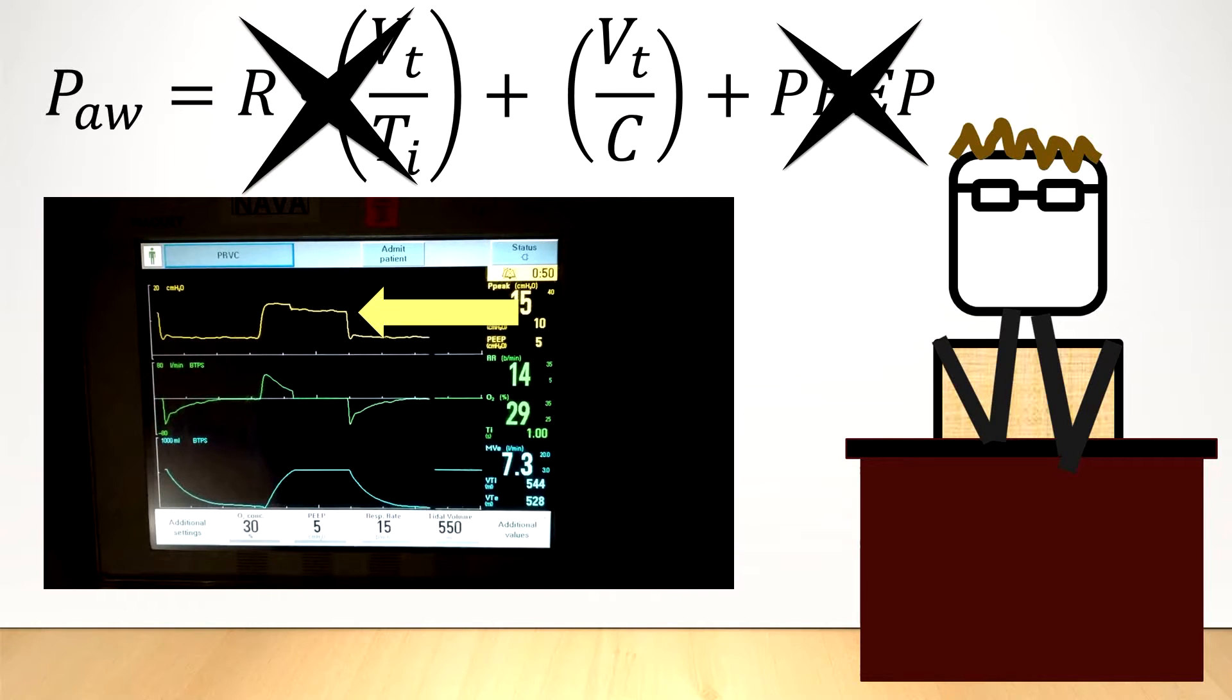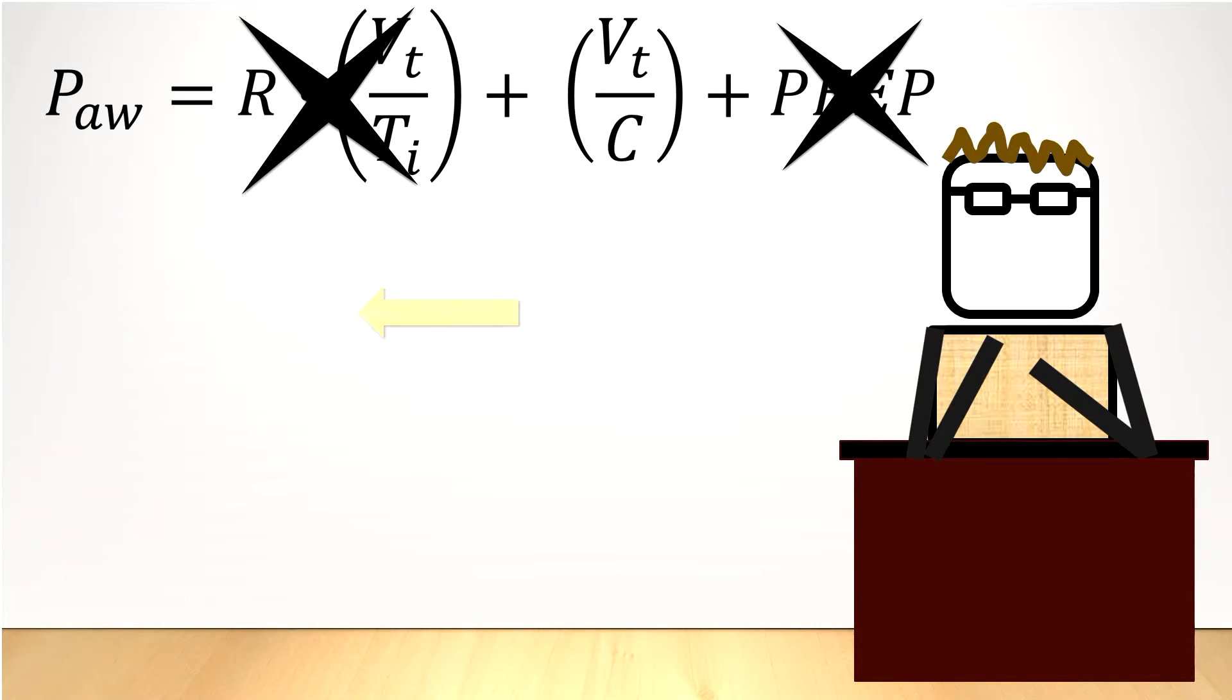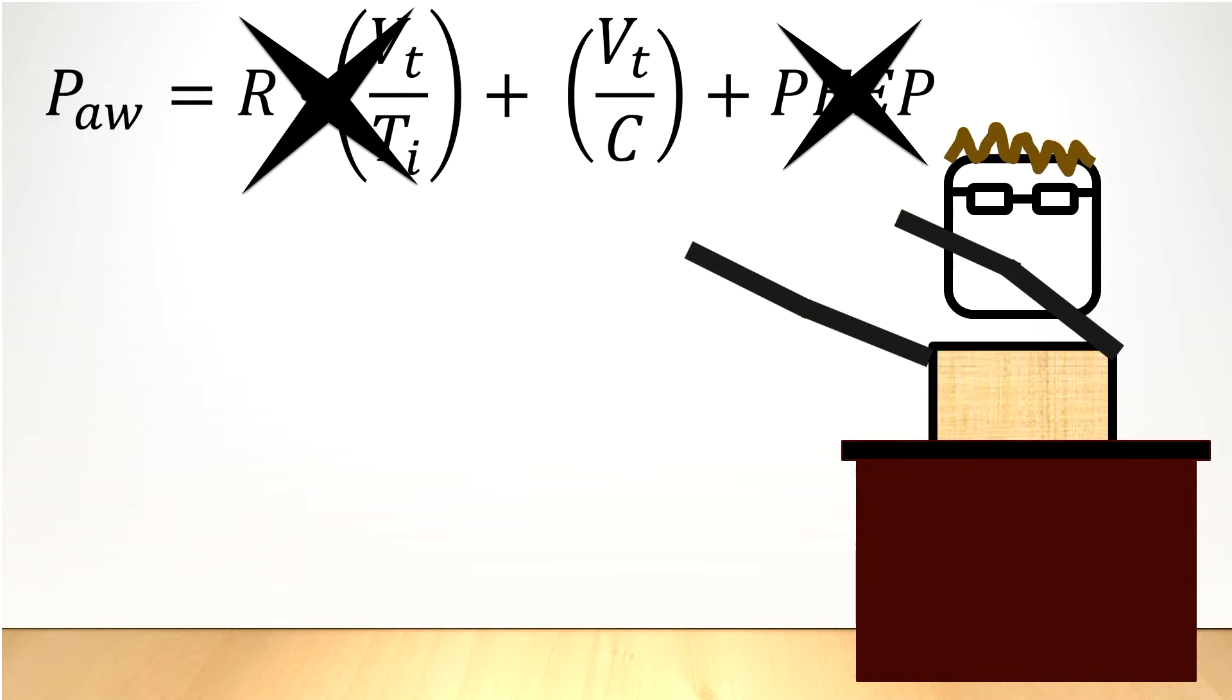So this is the pressure that the lungs are experiencing. Now in general, if the plateau pressure is greater than 32, then the lungs are actually being injured. But when the peak airway pressure is less than 32, it's physically impossible for the plateau pressure to be greater than the peak pressure. And so the plateau pressure will always be lower than 32, and therefore the lung is at less risk of harm.